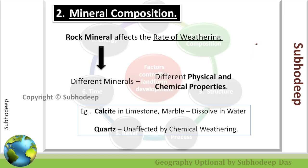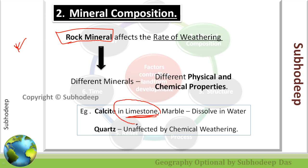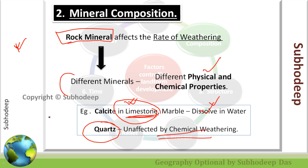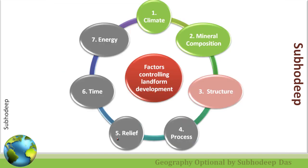The next factor is mineral composition. How does it affect landform development? Rocks are made up of different minerals. That mineral may be water-soluble, or it may not be water-soluble. For example, limestone is a water-soluble mineral, whereas quartz is not affected by chemical weathering. These two kinds of rocks have different physical and chemical properties, so different kinds of landforms occur where limestone is dominant versus where quartz-like material is dominant. That's why mineral composition plays one of the major roles.